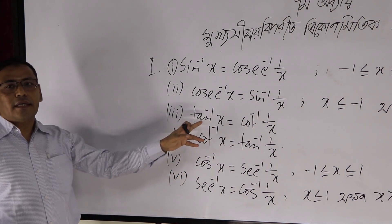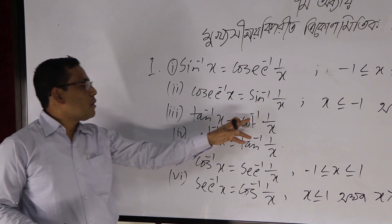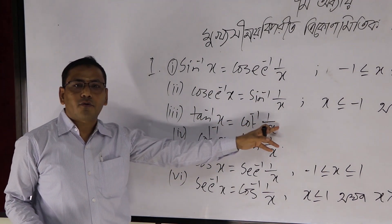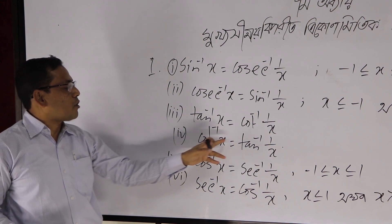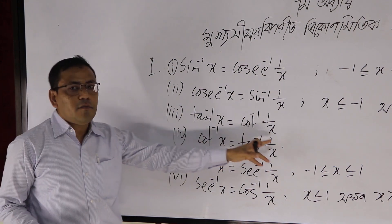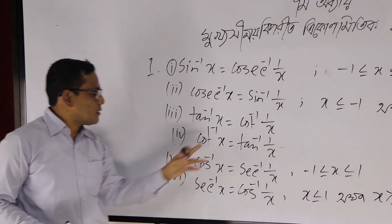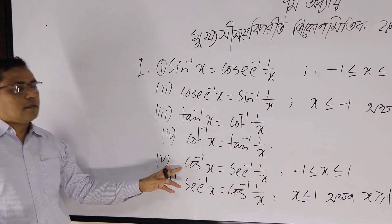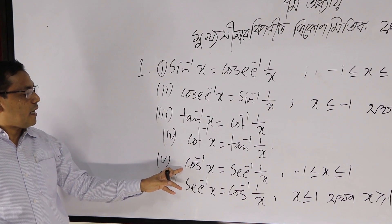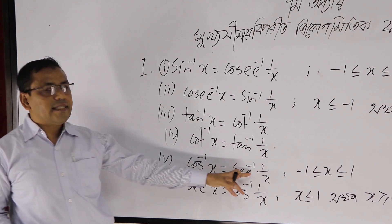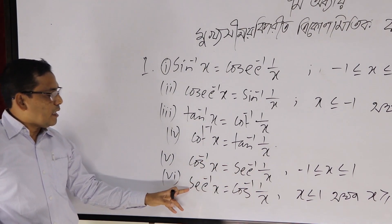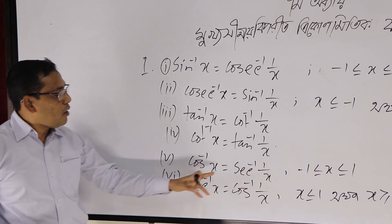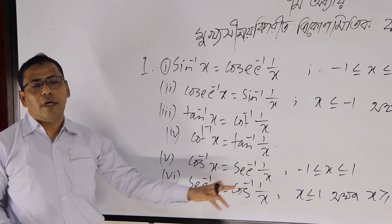Tan inverse x equals cot inverse 1 by x. Cot inverse x equals tan inverse 1 by x. Cosec inverse x equals sin inverse 1 by x. Sec inverse x equals cos inverse 1 by x.